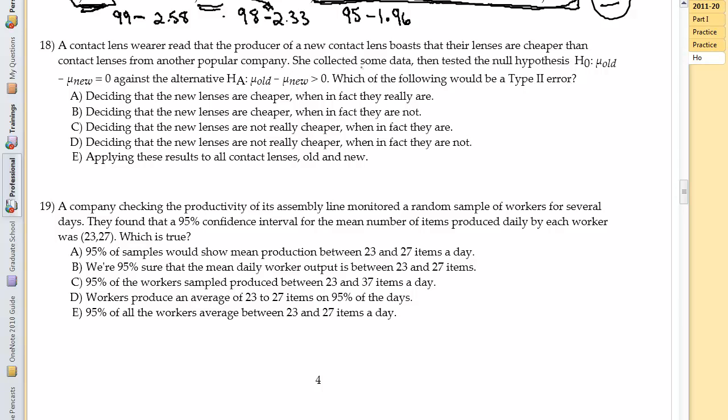She collected some data and then tested the null hypothesis. The old minus the new equals zero and the old minus the new is greater than zero. So that would make the old ones more expensive and the new ones less expensive. Which of the following would be a type 2 error?